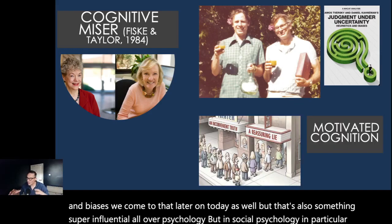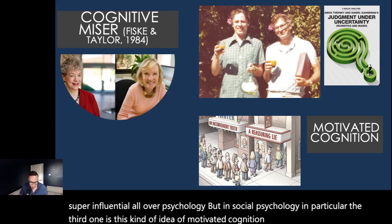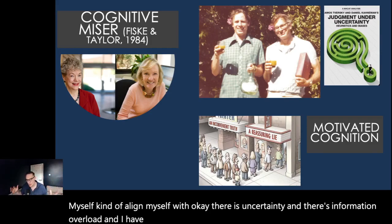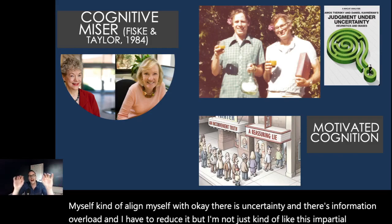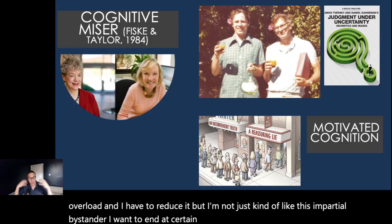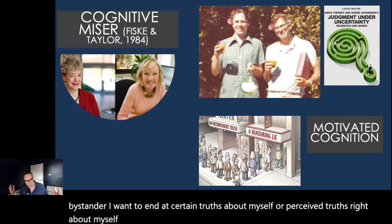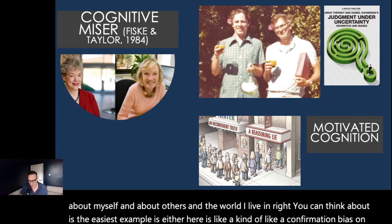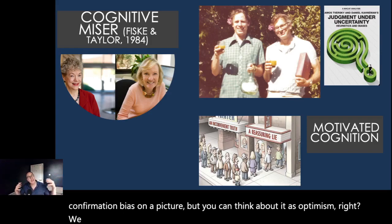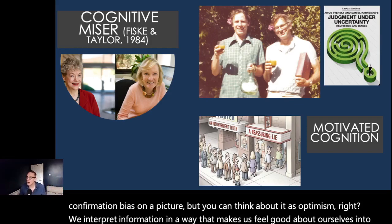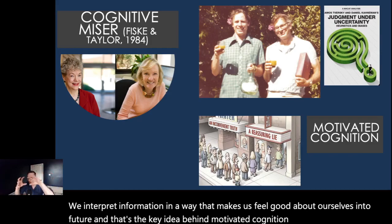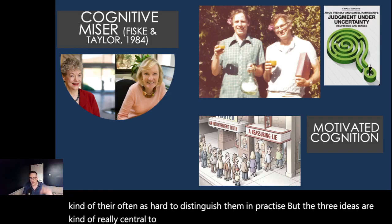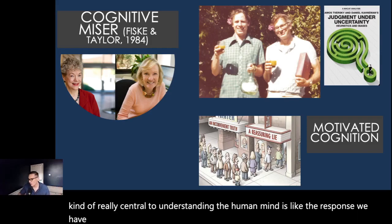The third idea is motivated cognition — a camp I would align myself with. There is uncertainty and information overload to reduce, but I'm not just an impartial bystander. I want to arrive at certain truths — or perceived truths — about myself, others, and the world I live in. The clearest example is optimism or confirmation bias: we interpret information in a way that makes us feel good about ourselves and the future. These three fields — cognitive miser, heuristics and biases, and motivated cognition — are really central to understanding the human mind and our response to uncertainty and information overload.